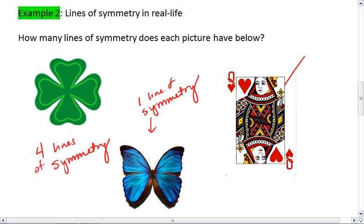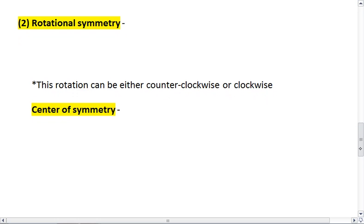We cut diagonally. Still not gonna give us a line of symmetry. So actually, the queen of hearts has no line of symmetry. There is a symmetry about the queen of hearts, and that's what we're gonna talk about next, in rotational symmetry.